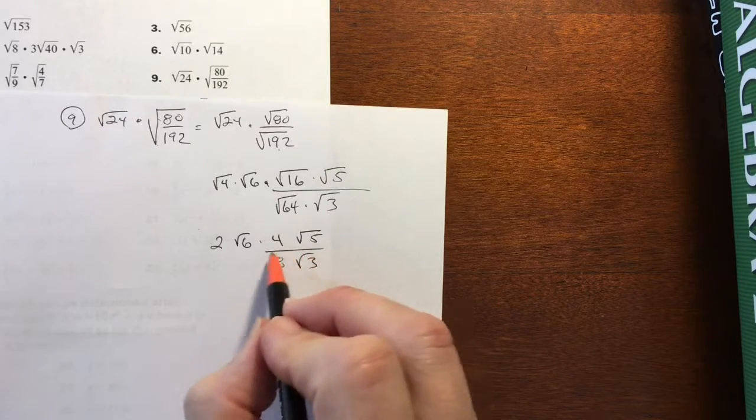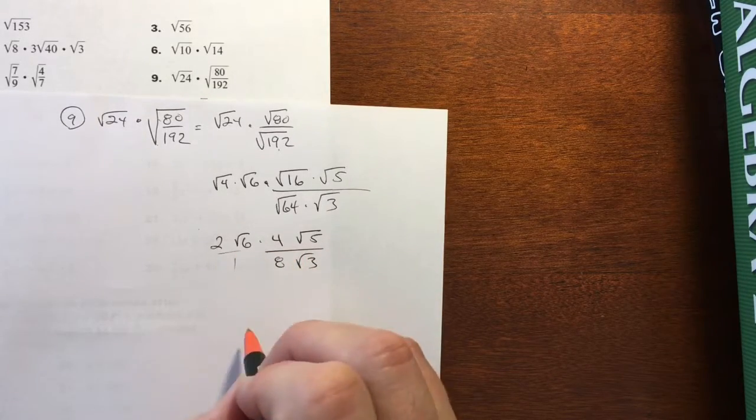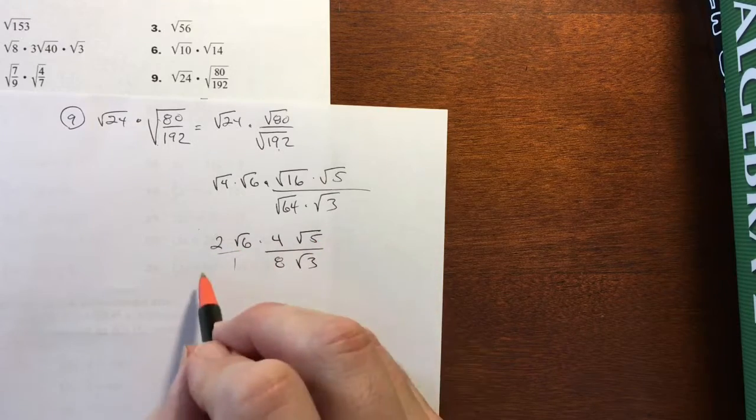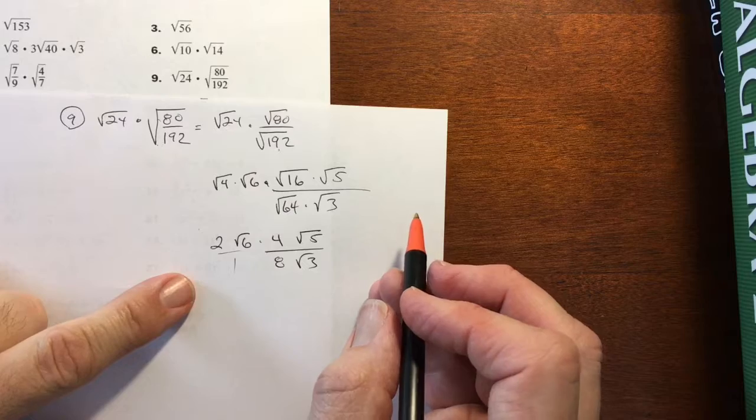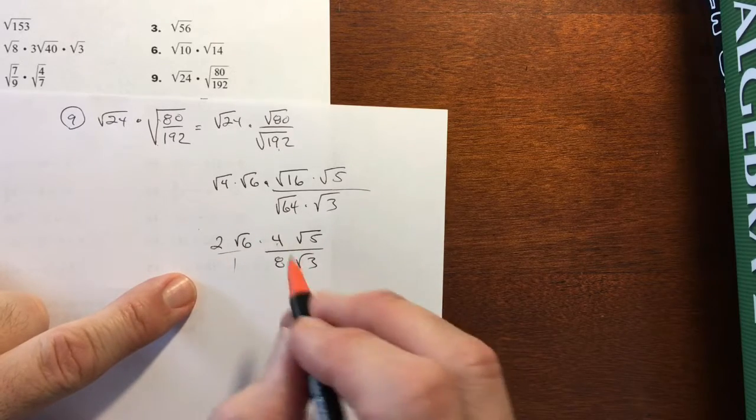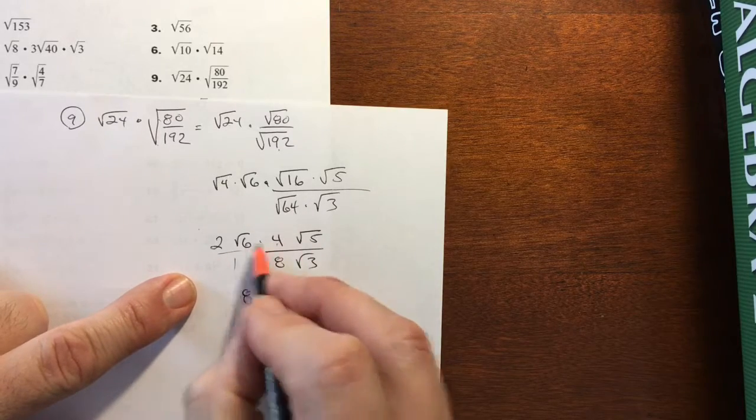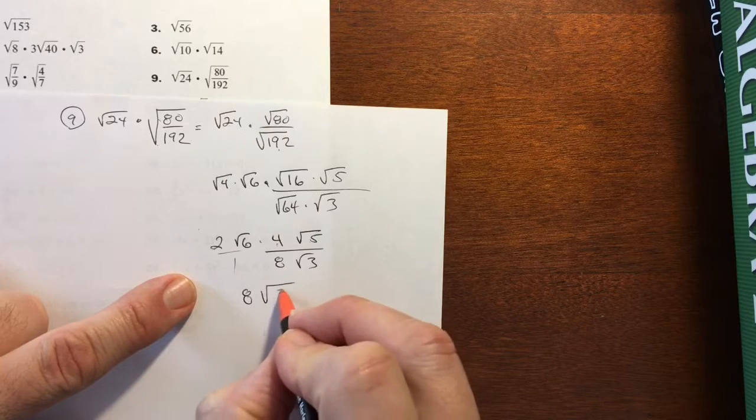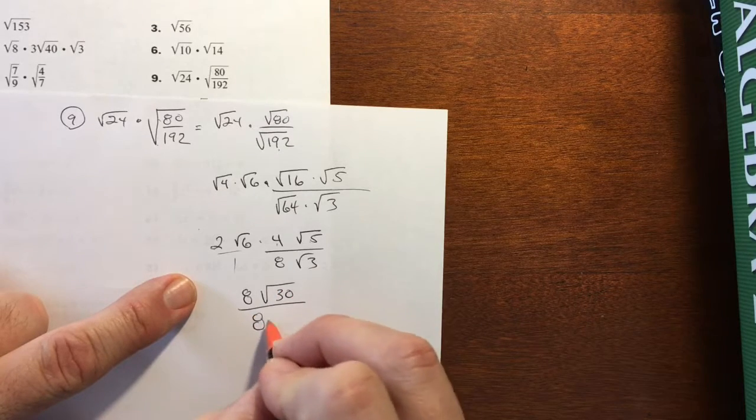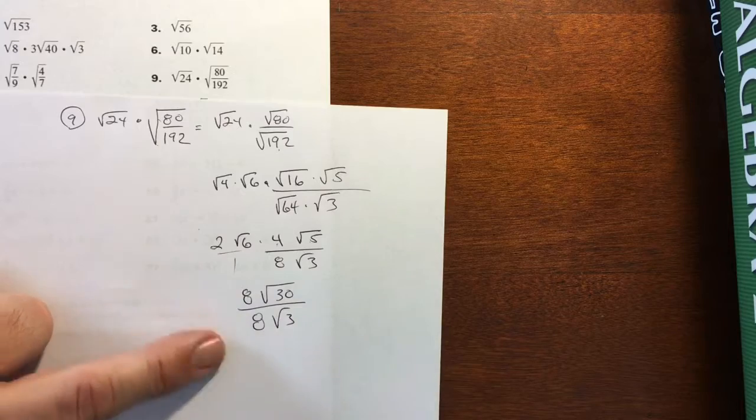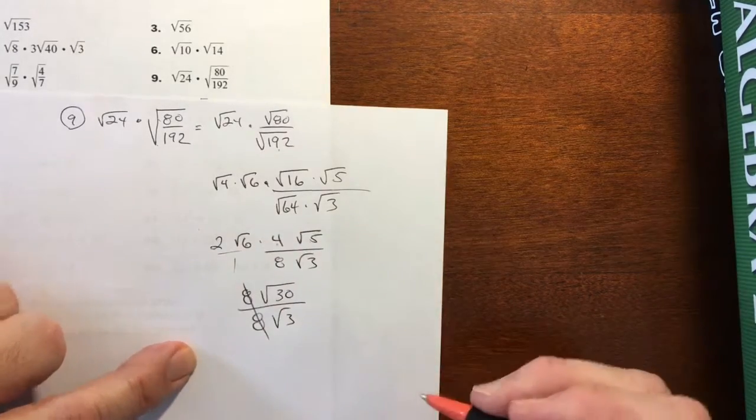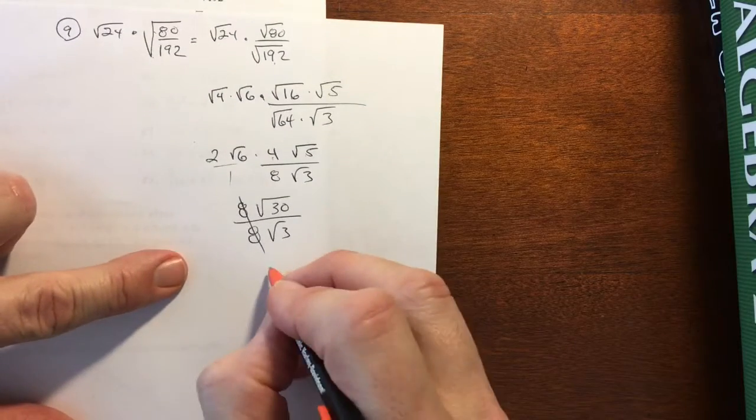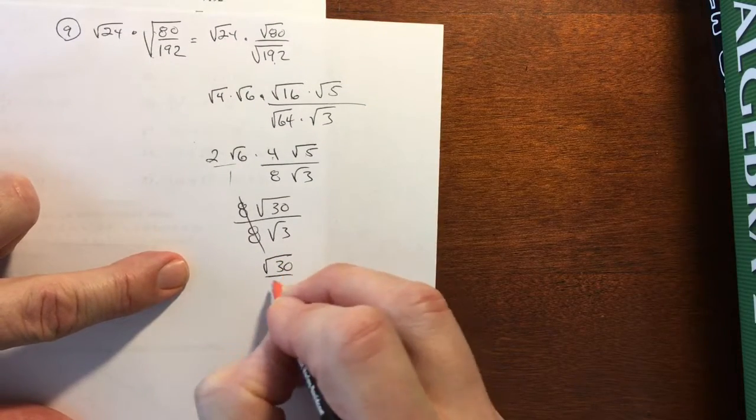Now, don't be confused by this fraction here. This is just over 1. So I can multiply things straight across the top, straight across the bottom, which I'll do right now to clean things up a bit. 2 times 4 is 8. 6 times 5 is 30. The bottom is 8 times square root of 3. Well, here's a quickie to clean up right away. The 8s are gone.